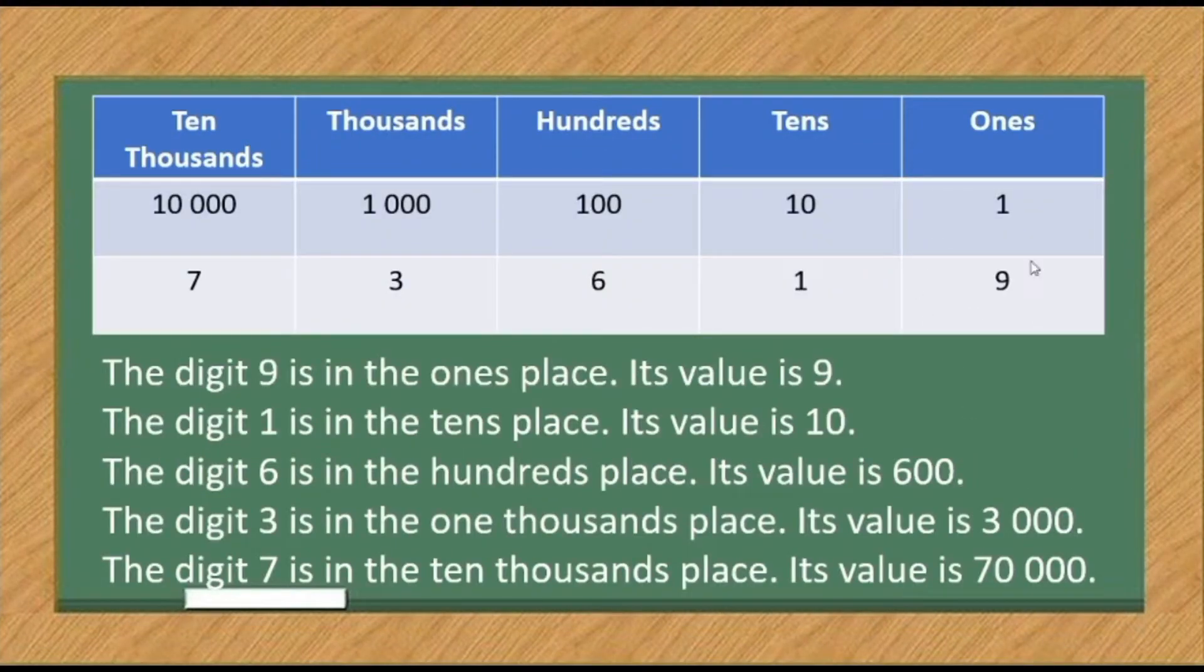The digit 9 is in the ones place. Its value is 9. The digit 1 is in the tens place. Its value is 10. The digit 6 is in the hundreds place. Its value is 600. The digit 3 is in the thousands place. Its value is 3,000. And the digit 7 is in the ten thousands place. Its value is 70,000.